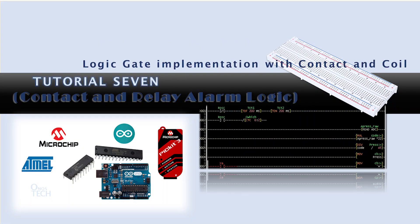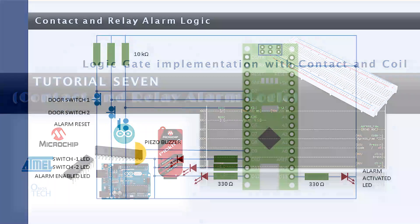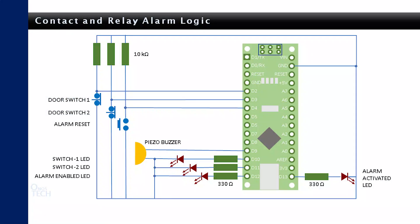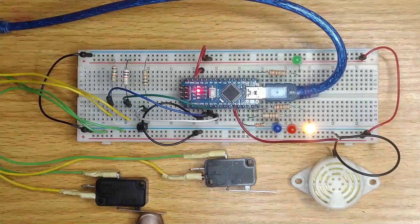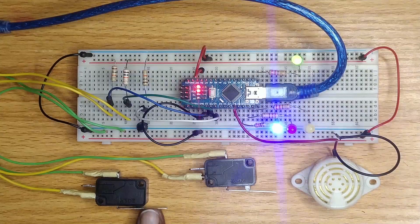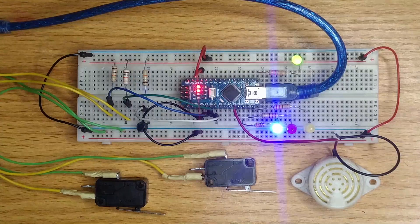Contact and relay, or as we should call it, COI. Today we will create a simple security alarm program with the basic instruction elements in LDmicro. We will test the program on the Arduino Nano breadboard circuit from tutorial 6.